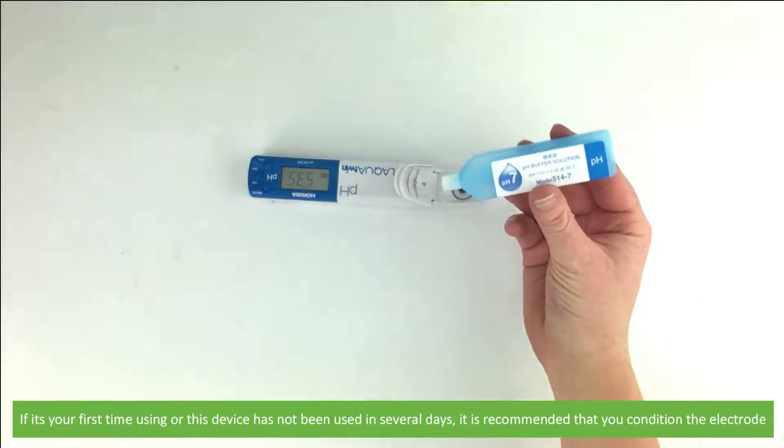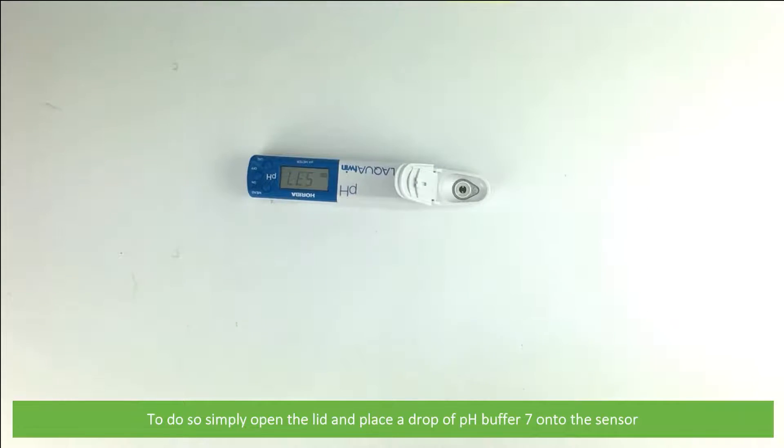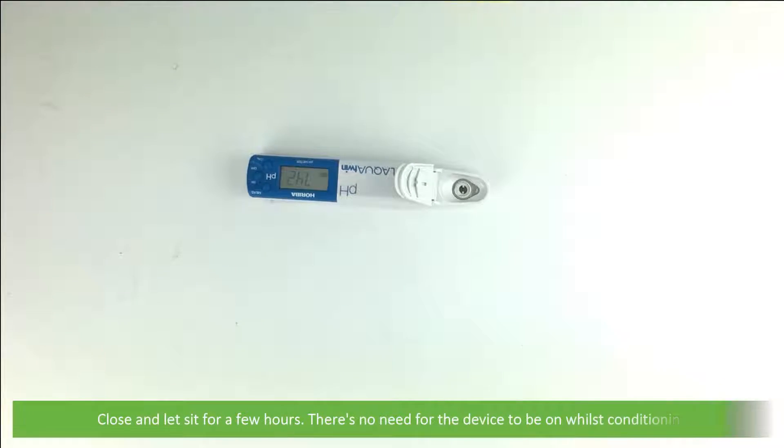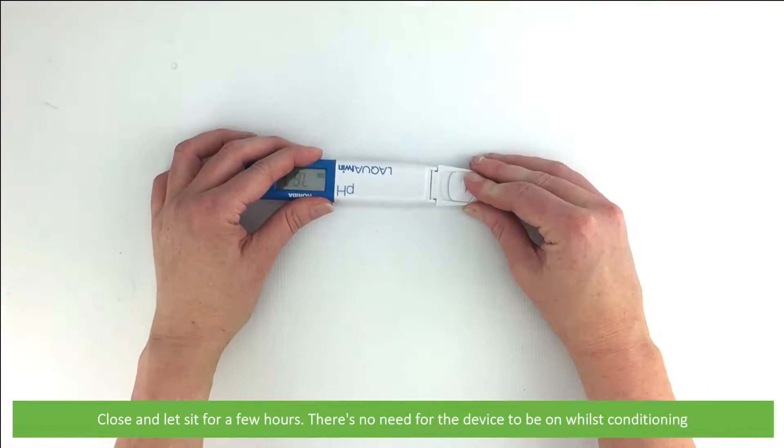To do so, open the lid and place a drop of pH buffer 7 onto the sensor. Close the lid and let it sit for a few hours. There's no need for the device to be left on whilst conditioning.